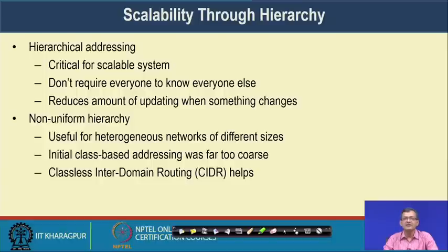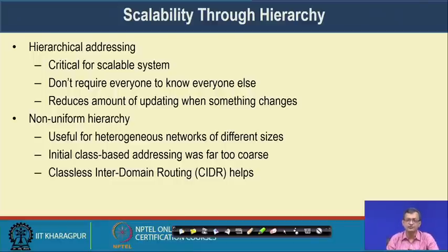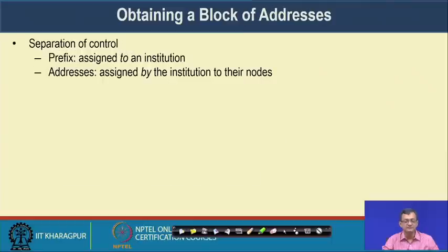There are also non-uniform hierarchies useful for heterogeneous networks of different sizes. Initially class-based addressing was the norm, but CIDR helps with flexible hierarchies, though it brings its own challenges in handling routing — which we will see.